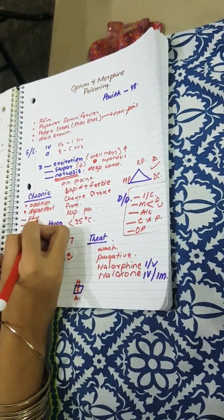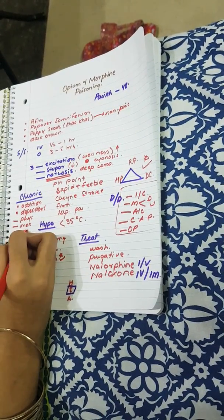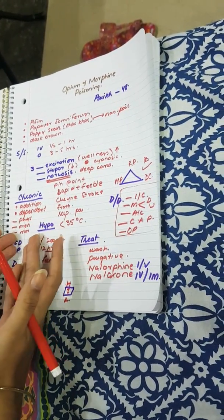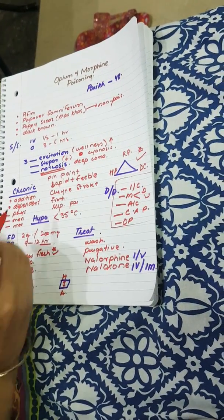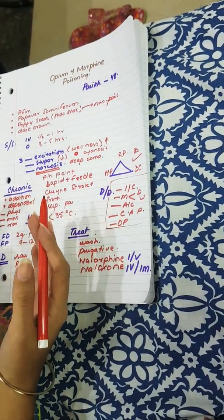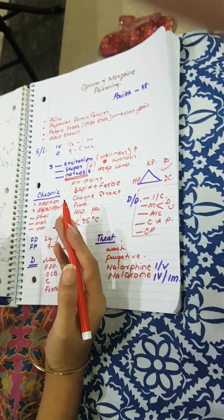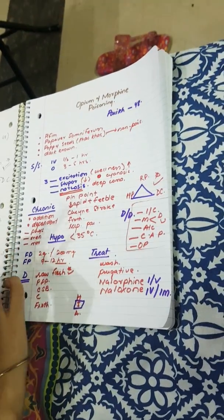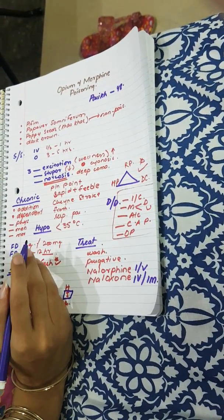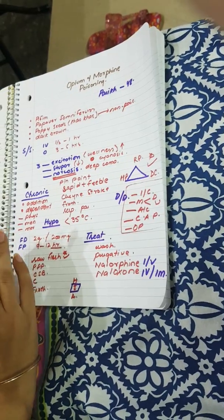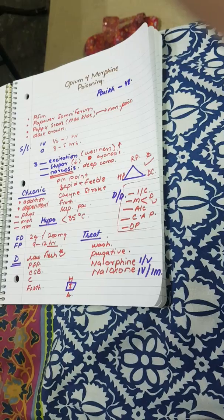In the chronic poisoning state there would be three stages: the physical deterioration stage, the mental deterioration stage, and the moral deterioration stage. First, the moral deterioration, where there will be increased cases of crime. Then there will be mental deterioration which is characterized by loss of memory, irritability, depression, and all these kinds of psychiatric problems. Then there is physical degeneration which is characterized by emaciation, infection, anorexia, constipation. So this was all about opium and morphine poisoning. Any questions can be asked in the comment section.